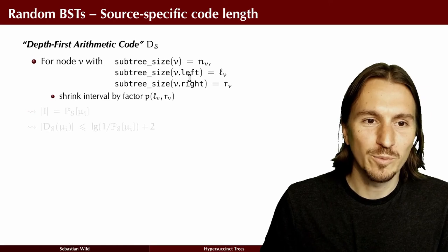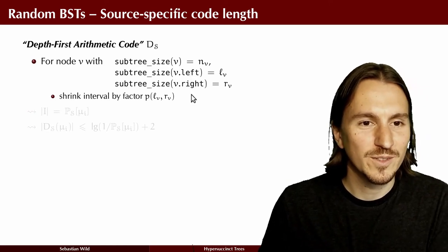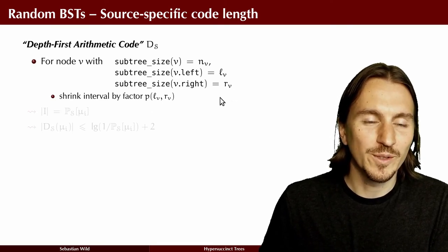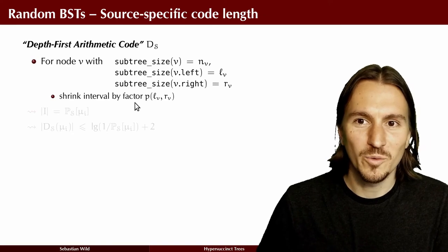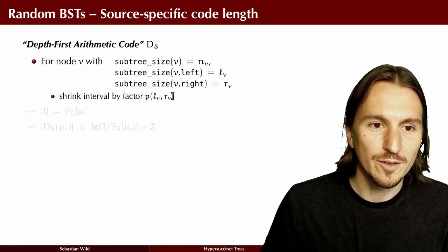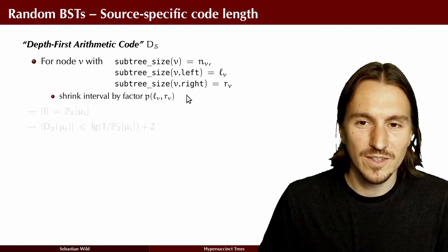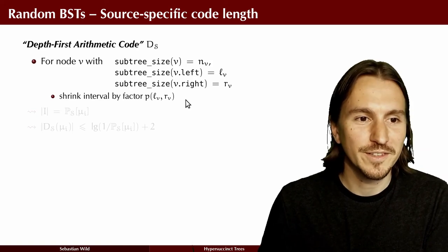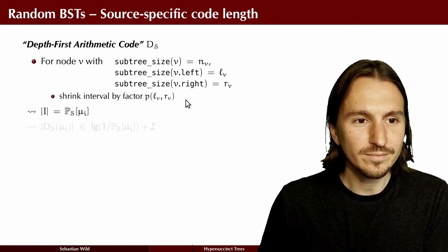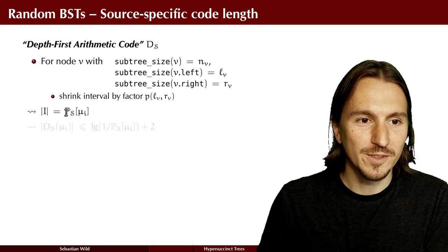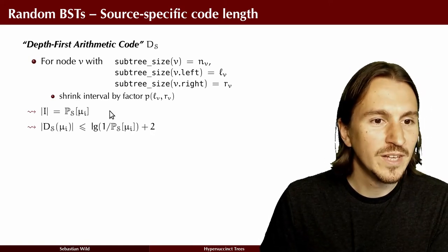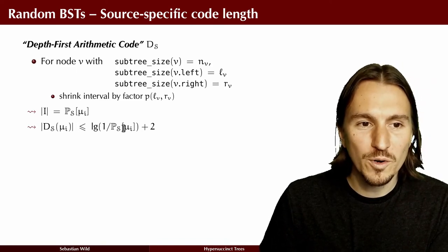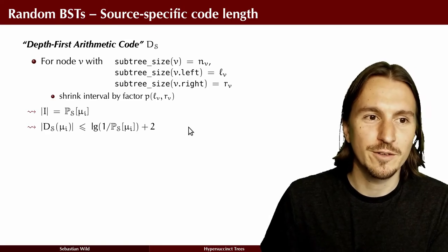This is what we call the depth-first arithmetic code for a tree given a source S, where for each node we store in essentially optimal space what the possible outcome is. Going through the example, we shrink our interval by a factor equal to the probability contribution of each node — the product of the probabilities for the subtree sizes — which is exactly the probability that this node contributes to the probability of the entire tree.